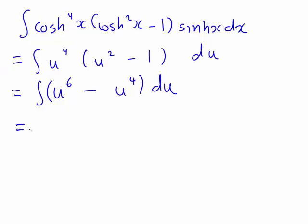Working out that integral, that just becomes u⁷ divided by 7 minus u⁵ over 5 plus C.